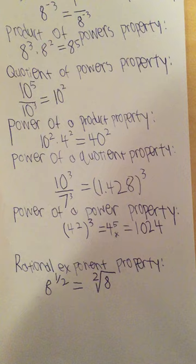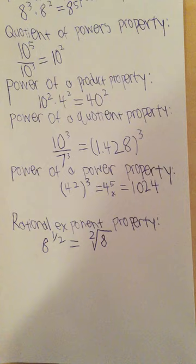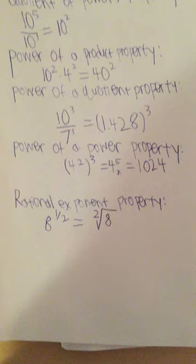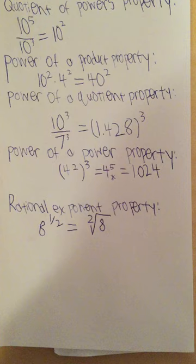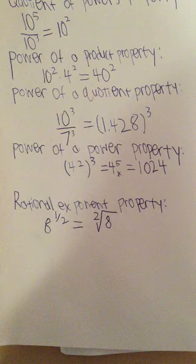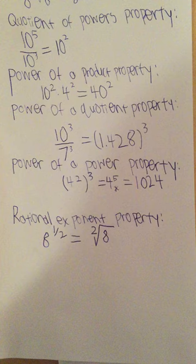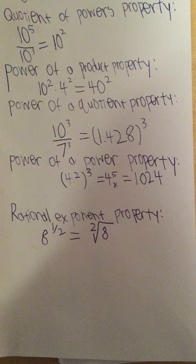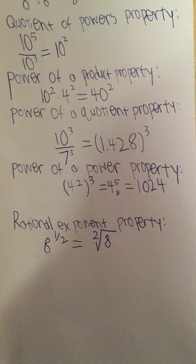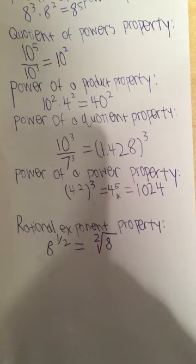Moving on to the power of a power property. So this is specifically for when you have a number in parentheses that's being squared, or raised to some number, but the parentheses are also being raised to another number outside that. For this one, you would add the two exponents together, the one outside the parentheses and the one inside. The example being 4 squared in parentheses raised to the third power. That would equal 4 to the fifth power, which in turn would equal 1,024 if you want to calculate it all out.